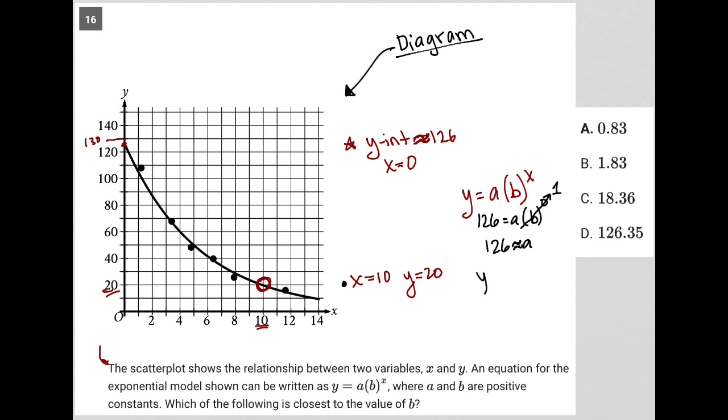So again, if I have my y equals, now instead of a, I'm going to call it 126b to the x. Then this information here tells me that y is 20 when x is 10. So I have 20 equals 126 times b to the 10th power.